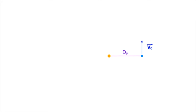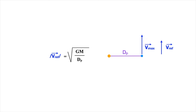We start with dp, and we ask the following question: if the orbit were a circular orbit, what would be the planet's velocity? The answer to that question will provide us with a helpful reference vector, which we will call Vref. In fact, we previously derived the formula we need when we were analyzing circular orbits. It tells us that the magnitude of Vref equals the square root of the quantity G times M divided by dp.